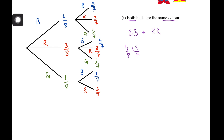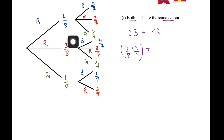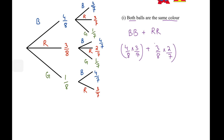So 4/8 times 3/7, plus now let's find out the probability of drawing two red balls consecutively. The first time you draw a red ball is 3 over 8, and the second time that can happen is 2 over 7. So 3/8 times 2/7. Let's figure this out: 4 times 3 is 12, and 8 times 7 is 56. Then 3 times 2 is 6, and 8 times 7 is 56 again. So 12 plus 6 is 18 over 56. Since they're both even, I'll simplify by 2, giving me 9 over 28. I can't simplify this any further.